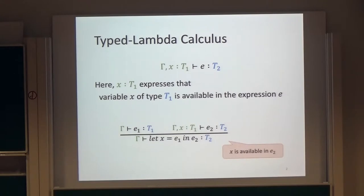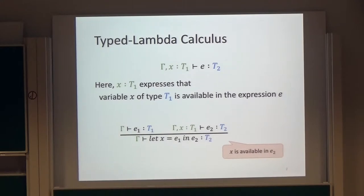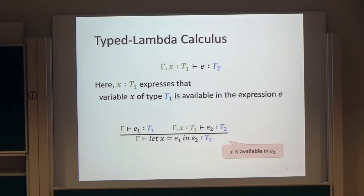I think everyone knows typed lambda calculus. Look at this type judgment. This is read as: an expression E has type T2 under the assumption gamma and X colon T1. Here, X colon T1 means a variable X has type T1 in the expression E. We can consider X colon T1 expresses that a variable X of type T1 is available in the expression E.